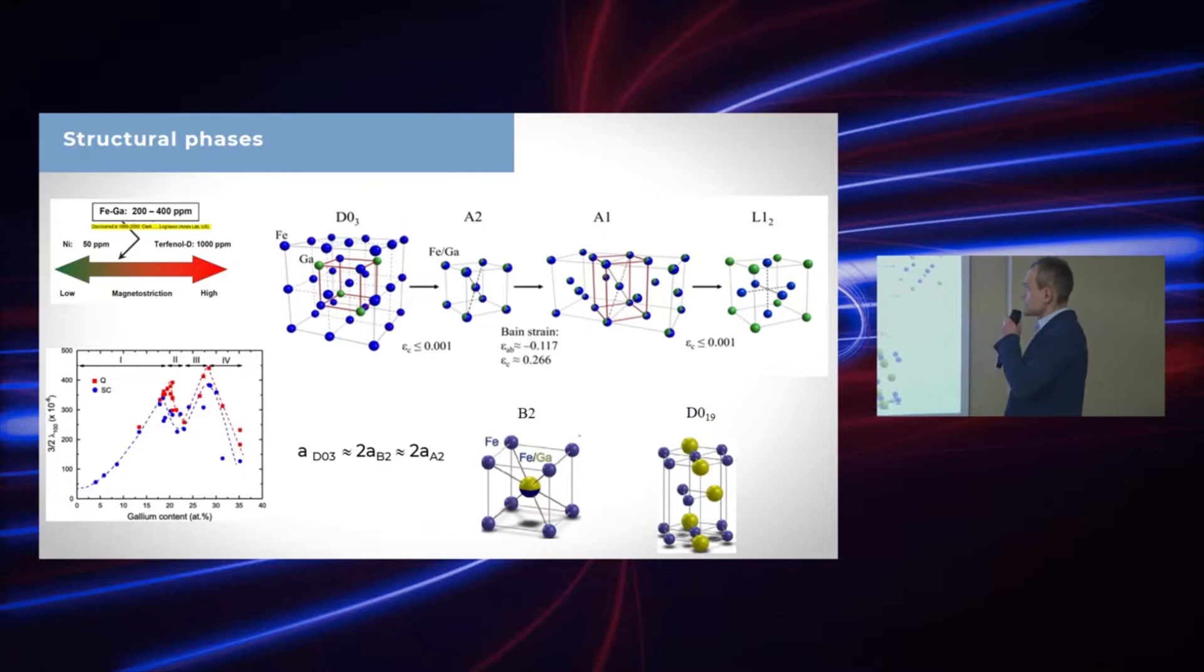Galfenols, based on iron gallium alloy, have two peaks, two maximums of magnetostriction. You can see from this picture it's about close to 19% of gallium and 27% of gallium. This is a puzzle and scientists try to solve why it is. And one of the keys for understanding this is phase content, structural phase content in these materials. In galfenols, there can be many phases. Most of them, this is cubic phases, ordered with large parameters and many other disordered phases with small parameters.